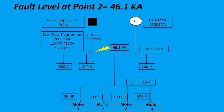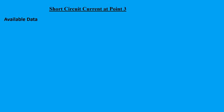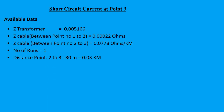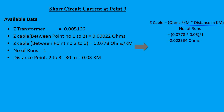Next, we'll see the short circuit current at point number three. Available data: Z transformer is 0.005166 ohms, Z cable between points one and two is 0.00022 ohms, and Z cable between points two and three is 0.0778 ohms per kilometre. The number of runs is one and the distance between point two and point three is 30 metres, which is 0.03 kilometres. Z cable equals 0.0778 multiplied by 0.03, all divided by one, which comes to 0.002334 ohms.